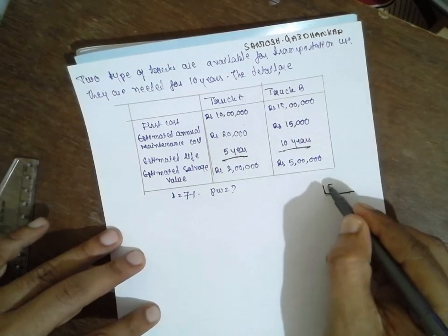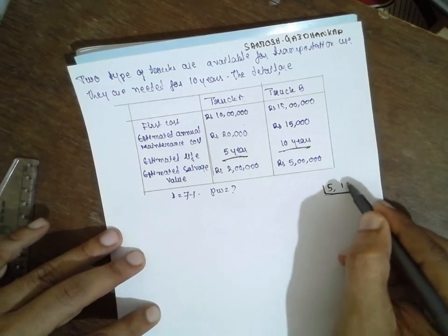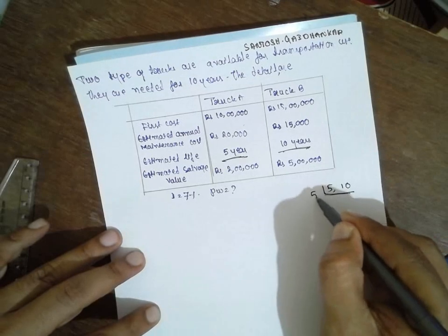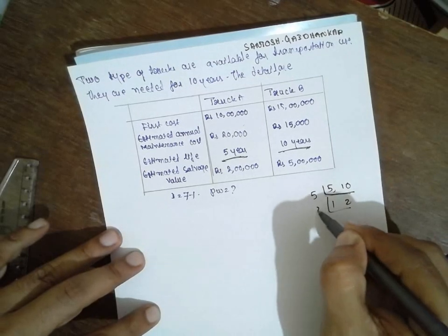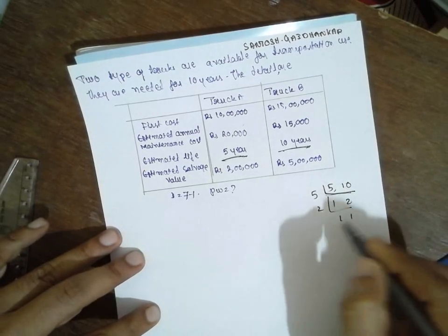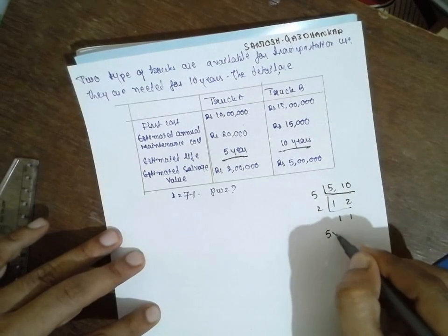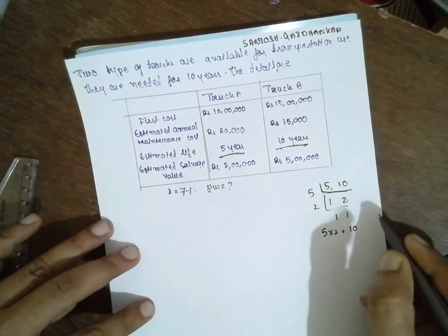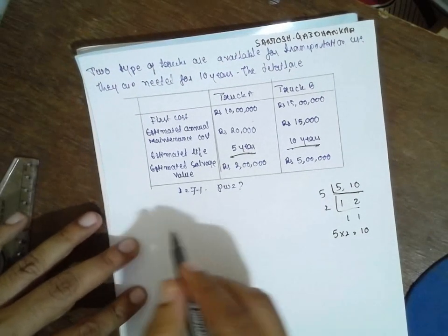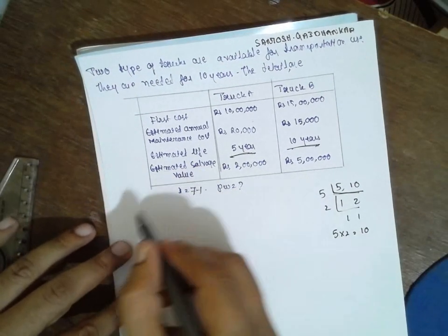Go for the LCM for this one: 5 and 10. The LCM will be 5 into 2, which is nothing but 10 years. You have to go for the comparison for the 10 years.